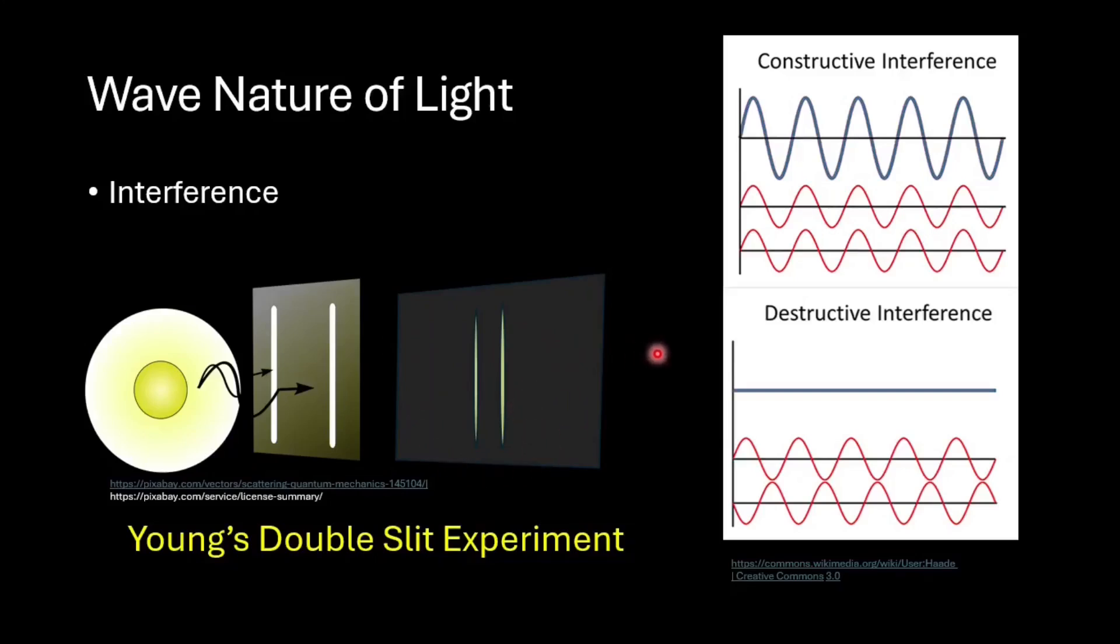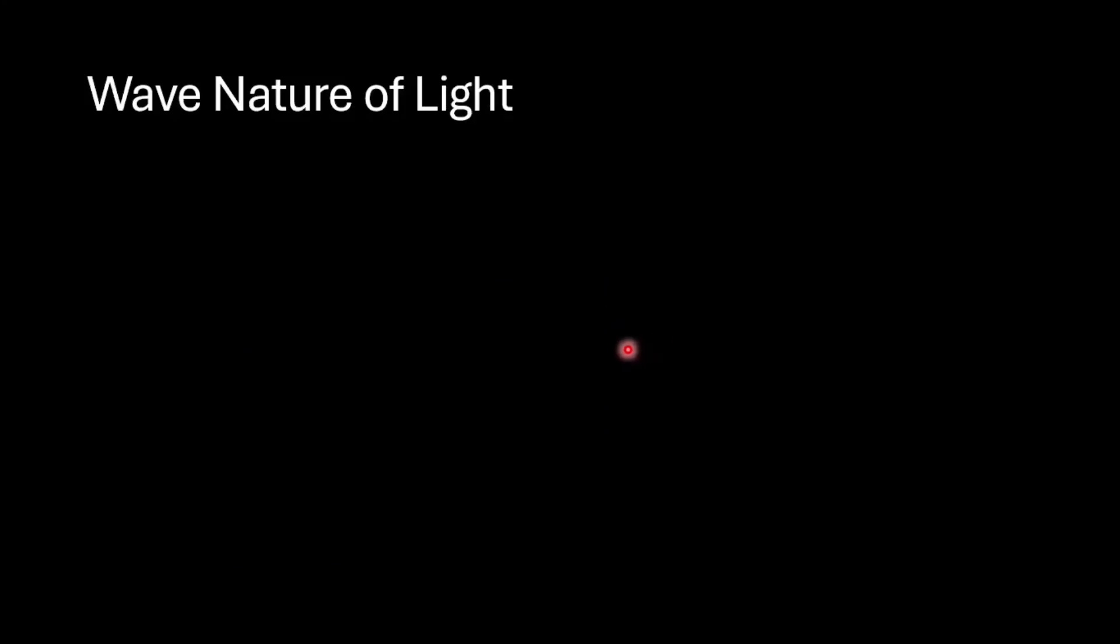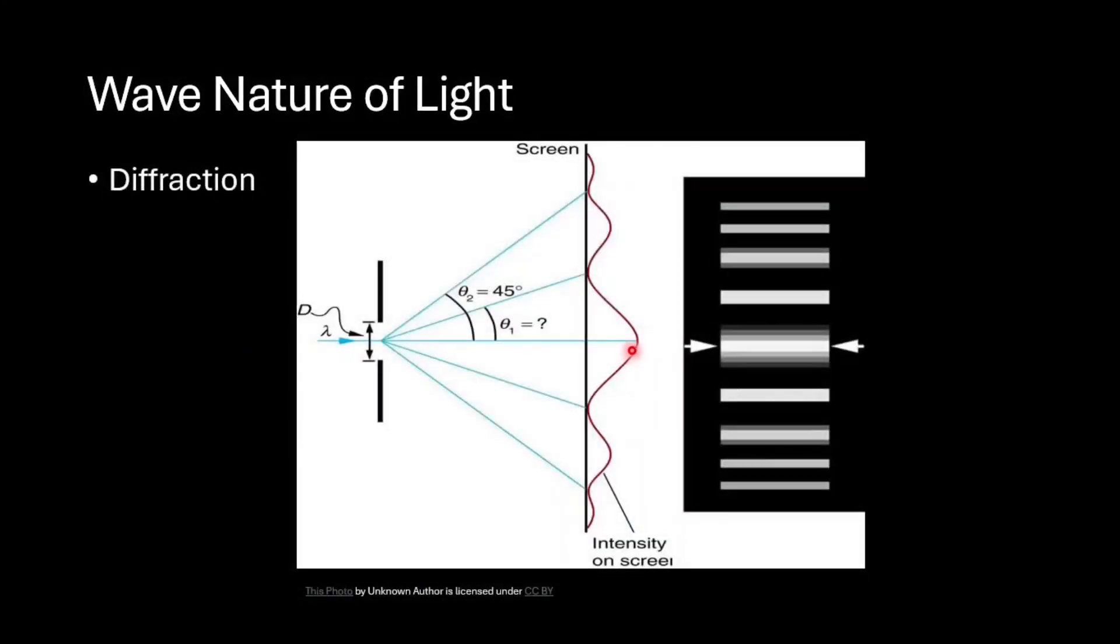Similar to interference providing evidence of wave nature of light, we also have diffraction. Diffraction is the phenomena in which light bends around a corner or bends around an object that has a size similar to the wavelength of light. Diffraction also gave similar bright and dark bands as interference, with a major difference being that in diffraction, we have interference of a single wave with itself instead of multiple waves in interference.